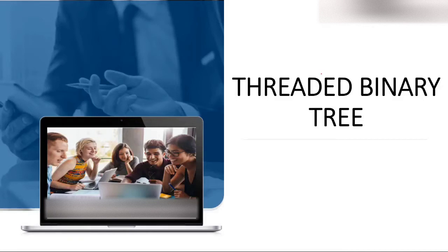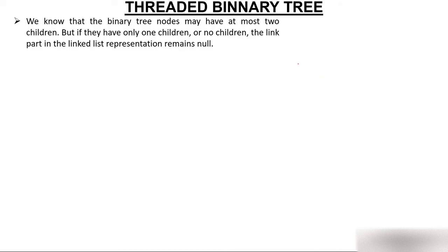Today the topic of discussion is threaded binary tree. We'll understand what is threaded binary tree, what is the meaning of thread, and why threaded binary tree is actually used. We know that a binary tree node may have at most two children — zero, one, or two, but not more than two. If a node has only one child or no children, these leaf nodes have null in their link representation.